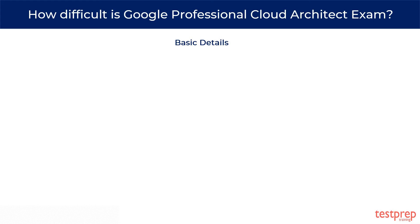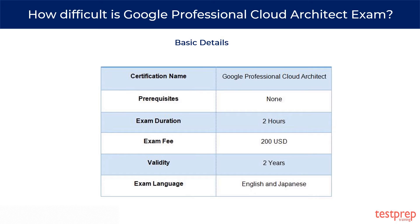Once you have a quick overview of the exam, it's time to give attention to the exam details. The Professional Cloud Architect Certification exam consists of 40 questions, which are multiple choice, with a duration of 120 minutes. The exam is valid for two years from the date of passing. There is no passing score given. The exam is available in two languages: English and Japanese. The exam costs $200 USD.